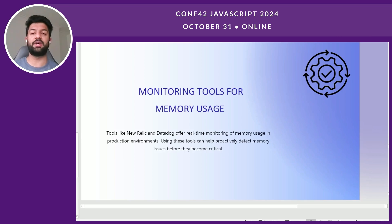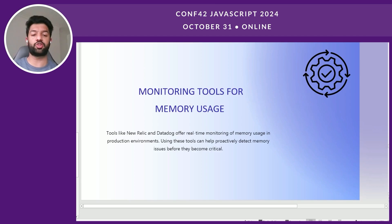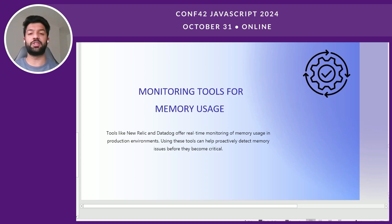Previously I described tools used manually at certain points, but there are also monitoring tools that can analyze your memory usage continuously from start to end. These tools help monitor at each stage when memory is going high or low. Tools like New Relic and Datadog offer real-time monitoring of memory usage in production environments, so if your app is live you can check memory usage after executing certain features and proactively identify memory leaks before they become too large.